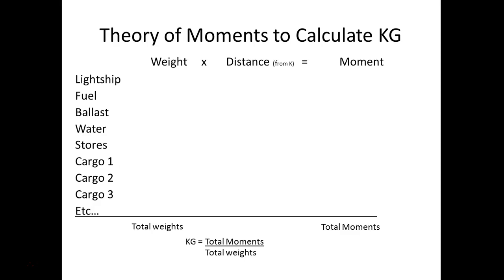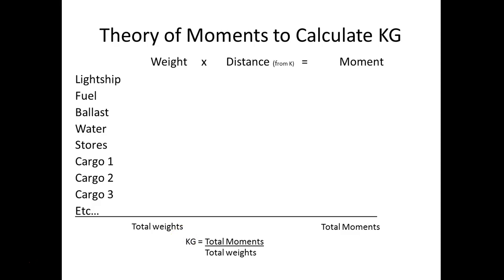Here is something that looks similar to what you would actually do manually — and this is what the stability program is doing as well. You're taking all the individual weights: the light ship, the fuel, the ballast water, stores, cargo. By the way, all this stuff collectively is the deadweight. We take the weight times the distance from the keel to get the moment, then sum all those weights and all those moments. If we take those moments divided by weights, we get the center of gravity for that ship.